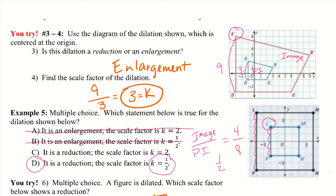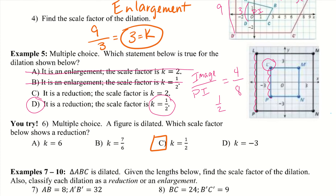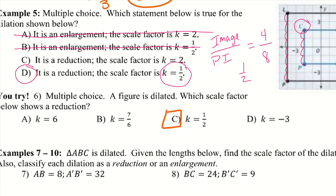Go ahead and try number 6 — it's multiple choice. We want to figure out which K is a reduction. Think about what we just talked about: a reduction has to be less than 1. A good key is to look for a fraction. But if we look at option B — 7 over 6, which is 1 and 1 sixth — that is actually greater than 1, so B cannot be the answer.